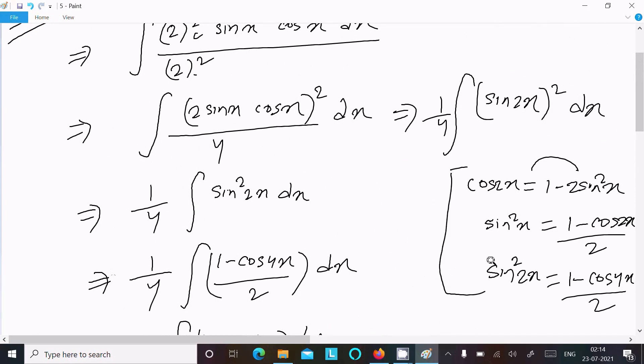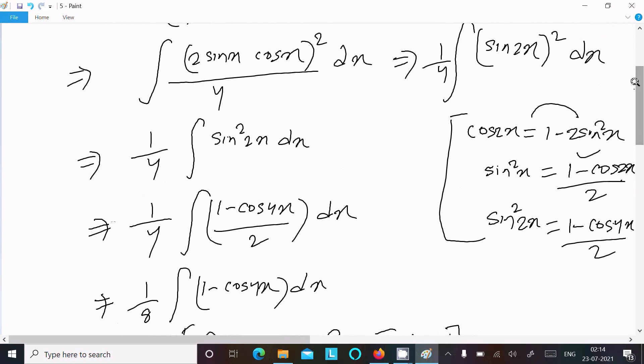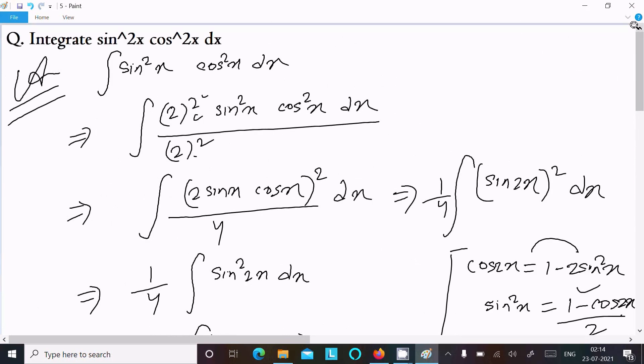The key formula required is sin²(2x) = (1 - cos 4x)/2. This is how we solve this integration problem. I hope this video is helpful. Thanks for watching, see you next time!